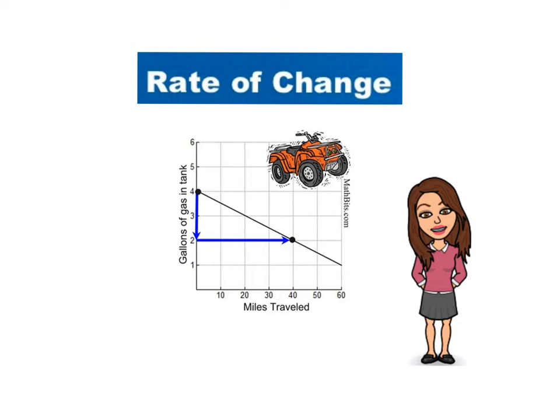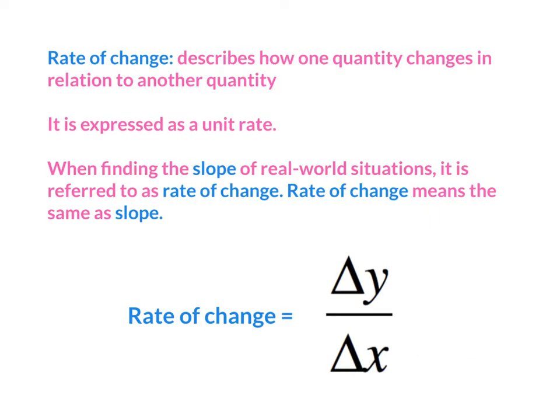In this video you will learn how to find the rate of change from a table and from a graph. The rate of change describes how one quantity changes in relation to another quantity. It is expressed as a unit rate. When finding the slope of real world situations, it is referred to as rate of change. The rate of change means the same as slope. To find the rate of change, you find the change in y over the change in x.